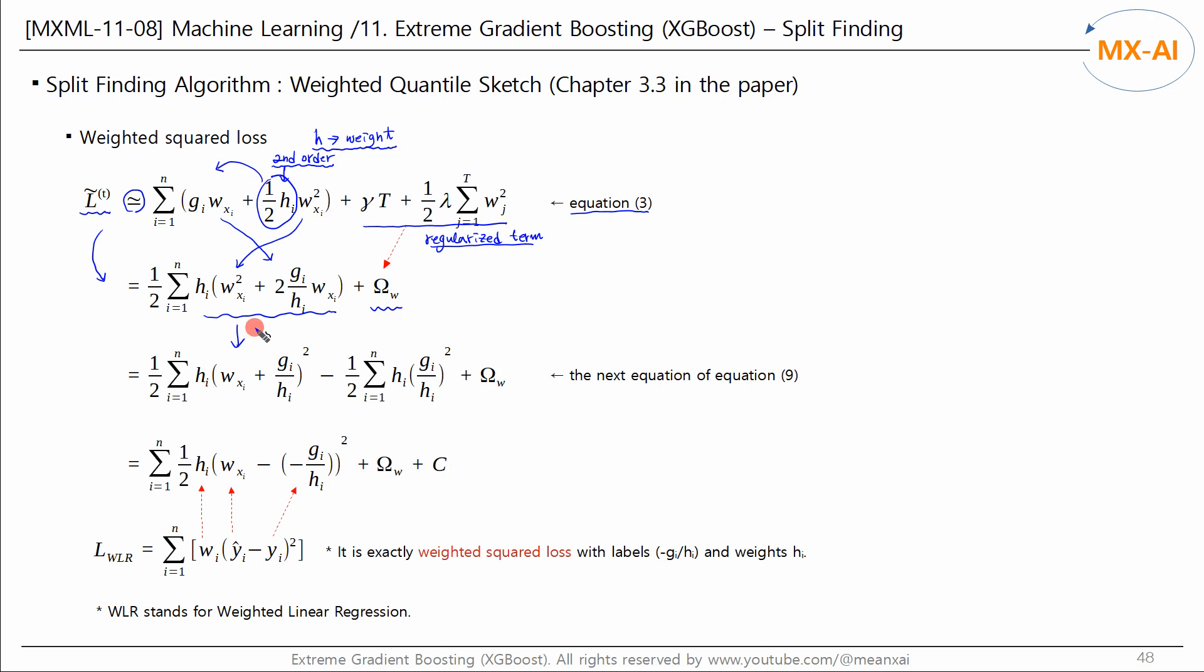This equation can then be expressed as a perfect square as follows. Here, the first term can be written like this. And the second term is independent of w, so it can be written as a constant. This expression is equivalent to the weighted squared loss function. The loss function of the weighted linear regression covered in the linear regression video is as follows. Calculating the squared loss as the difference between the predicted values and the actual labels multiplied by the weights w is the loss function of the WLR. The output value w corresponds to y-hat. And this part corresponds to the label. And if h is considered a weight, both expressions are the same form. Therefore, h can be used as the weights for the data points.